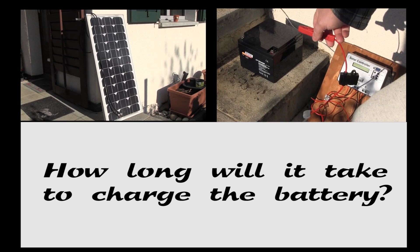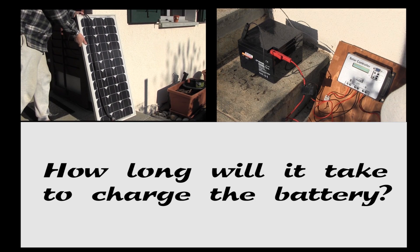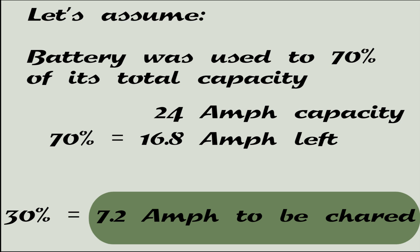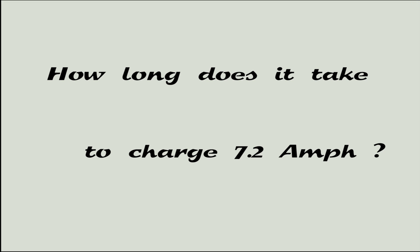Now let's assume that the battery was used down to about 70% of its total capacity. For our 24Ah battery, that means 16.8Ah are still available and 7.2Ah were used. The question therefore is: how long does it take to charge 7.2Ah back into the battery?